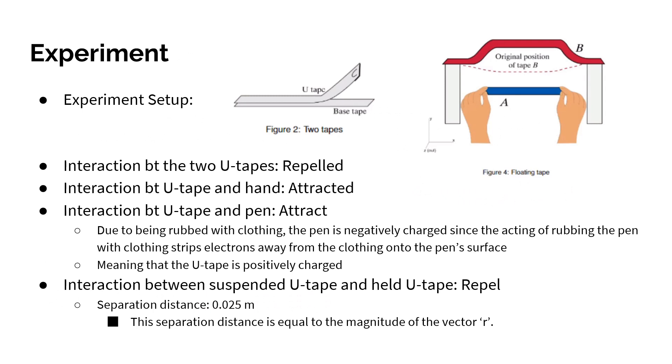This is the experiment setup. It's the same from lab 1. We're charging two pieces of u-tape, and then we're going to have one of them float above another one. This is the same observations from the first lab where we determine that the u-tape is positively charged because it repels when held to each other and it's attracted to our hand and tape and pen. And there's a separation distance there as well.